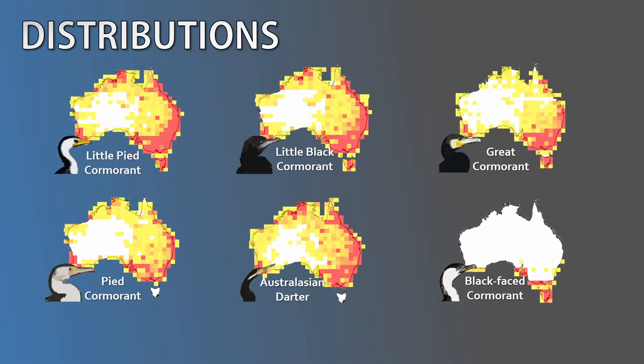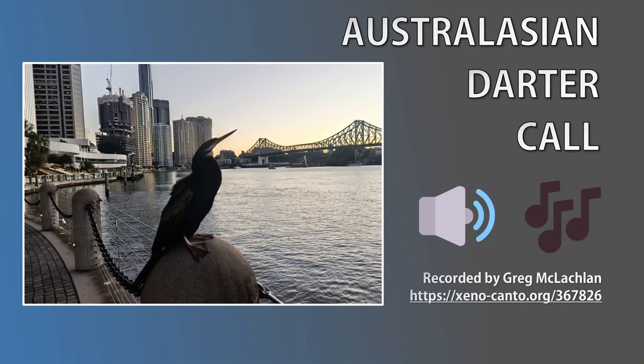Most of today's cormorant species are widespread across coastal and inland Australia — providing the area has a decent body of water, you'll likely find most species not far from your location. Note: in Tasmania, darters are not present and Australian pied cormorants are rarely reported. The larger cormorants are typically found around deeper water sources. The black-faced cormorant only occurs in coastal areas in Tasmania and along the southern mainland coast.